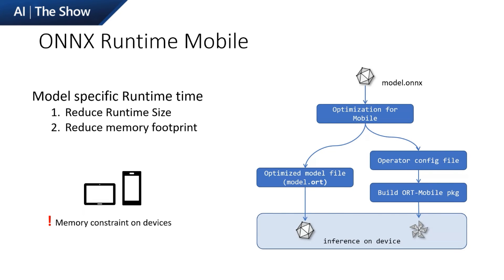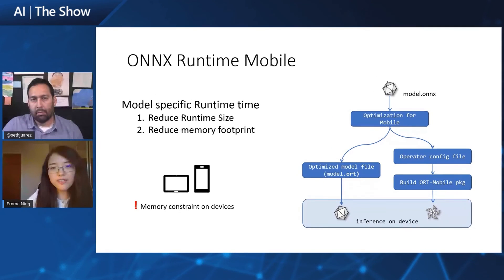With quantization, we can reduce the model size. Additionally, we can reduce the runtime size as well. ONNX Runtime Mobile is a new feature targeting minimizing the runtime size for usage in mobile and embedded scenarios. This capability extends ONNX Runtime to support optimized model inference from cloud to client, and is available in preview with ONNX Runtime Release 1.5.